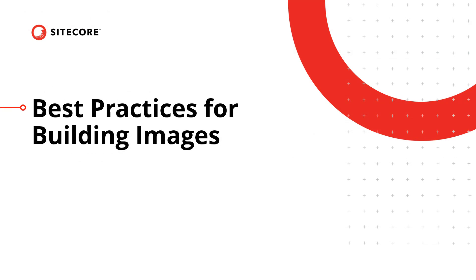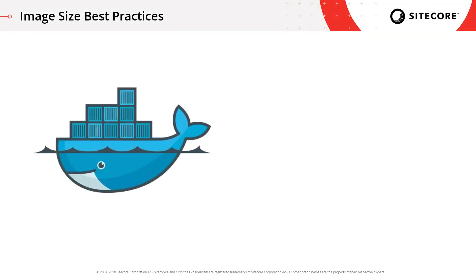We know roughly that we need to build some images and that they're going to be used to create the containers we need to run. There are different approaches you can take to building images, so let's take a look at some of the recommended best practices. The first area is around image size — you should always try and ensure your images are as small as possible. The first tip is to make sure you use the smallest size base image possible. There are various different Windows and Linux base images available, and you need to choose the smallest one that gives you the functionality set you need.